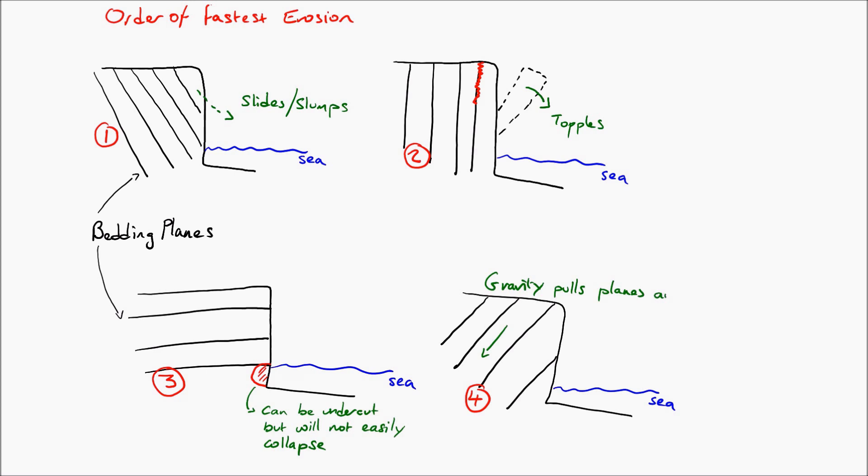Finally, in number four, the bedding planes are the opposite to number one and they're slanted away from the sea, which means that they are the least likely to erode particularly fast.